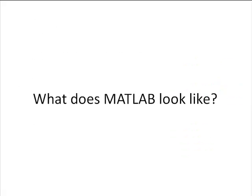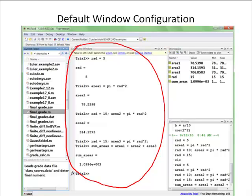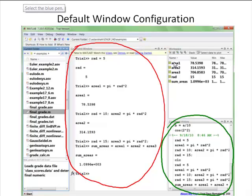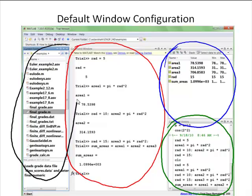Let's finish up this video with a brief introduction to what MATLAB looks like — we'll talk about the interface. When you open up MATLAB for the first time, you'll see something like this — not with all the text going on, but this is the default window configuration. We have the command window highlighted in red, the command history circled in green, the workspace window circled in blue, and the current folder window circled in black. Let's talk about each one of these windows by itself.